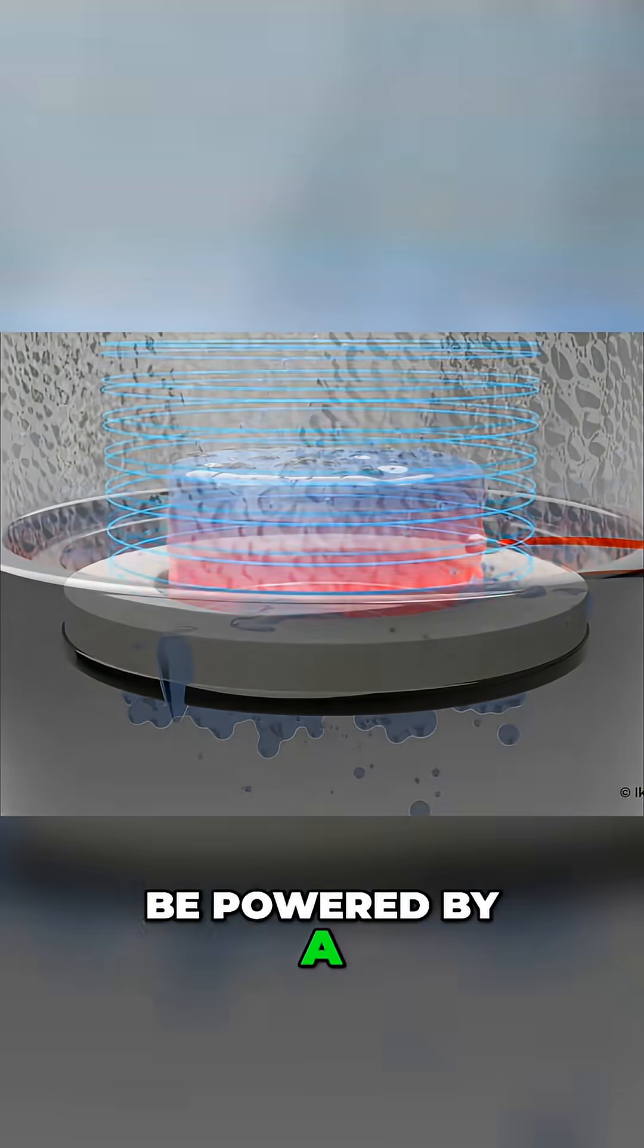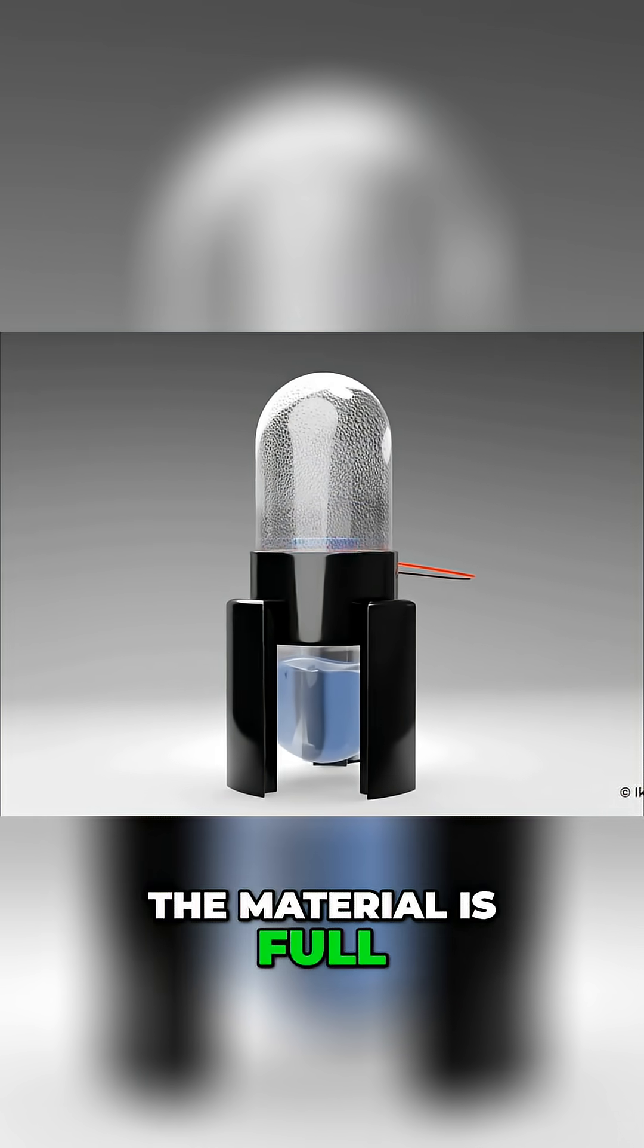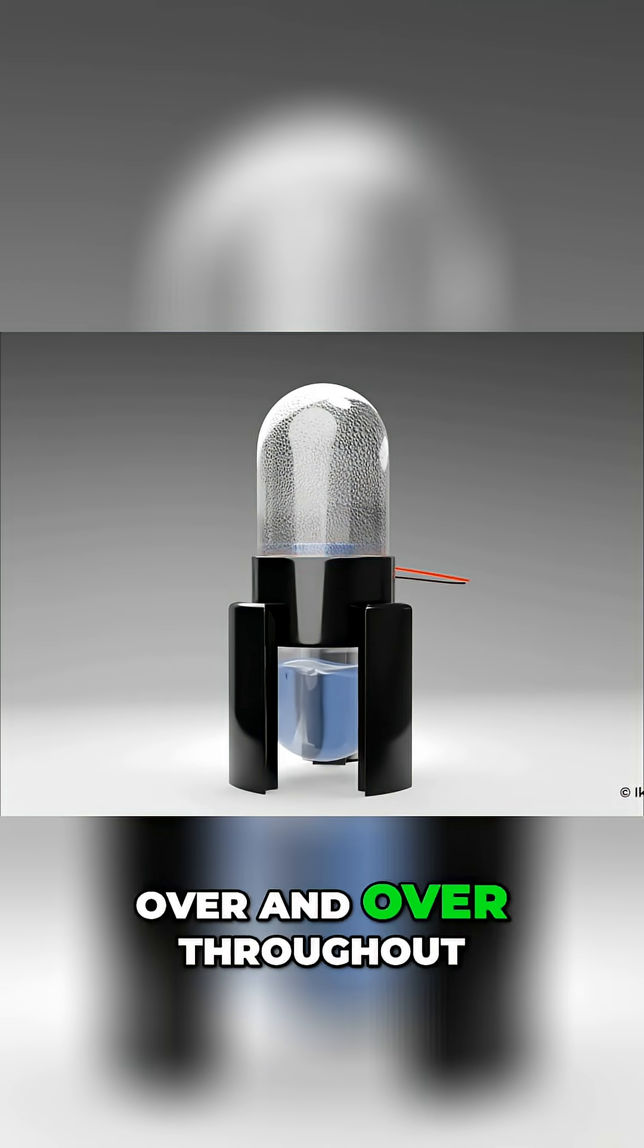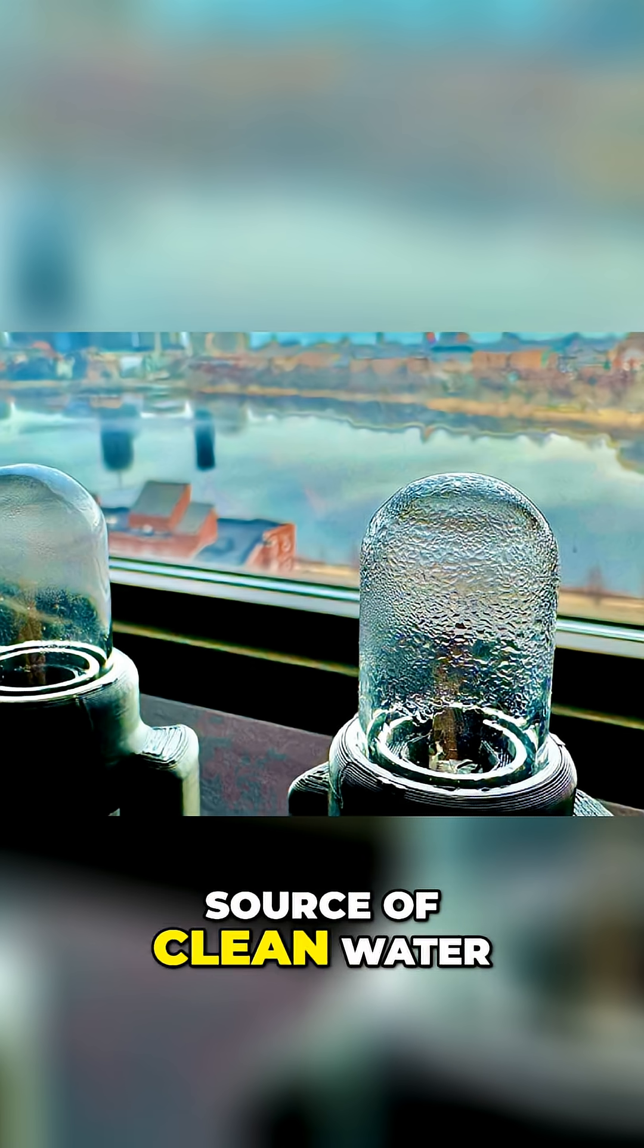The device could eventually be powered by a tiny solar cell, turning on automatically whenever the material is full, letting people harvest water over and over throughout the day. MIT says this tech could become a huge source of clean water for dry regions all over the world.